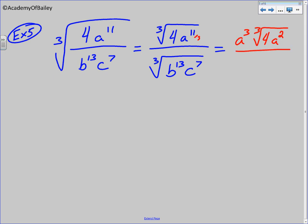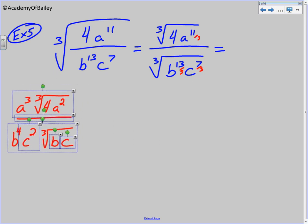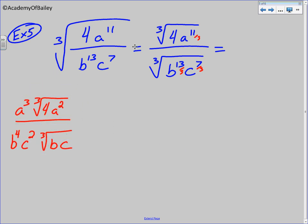The top part. It looks like we can pull out... If we divide by 3, we can pull out 3 triplets of a's, leaving us with 4a squared inside. And on bottom here... How many triplets of b's and c's can we pull out? Well, 13 divided by 3... 13 divided by 3 is 4 with 1 left over. So b to the 1st is left inside. And c to the 7th... Well, 7 divided by 3 is 2. And what's left over? There's 1c left inside.